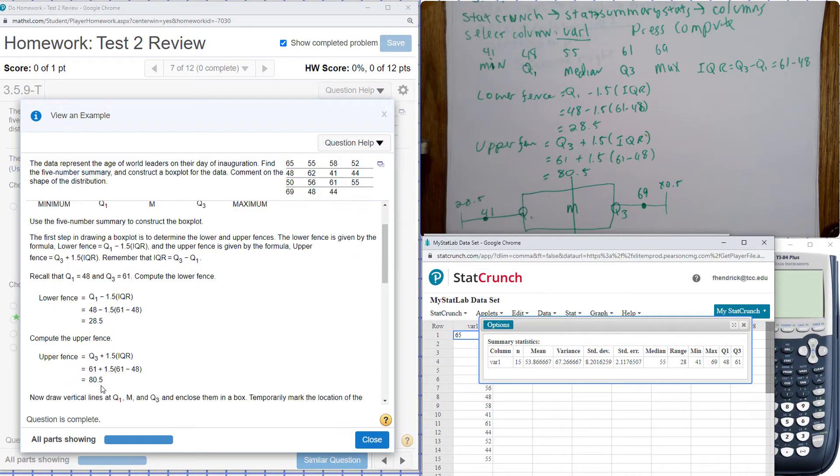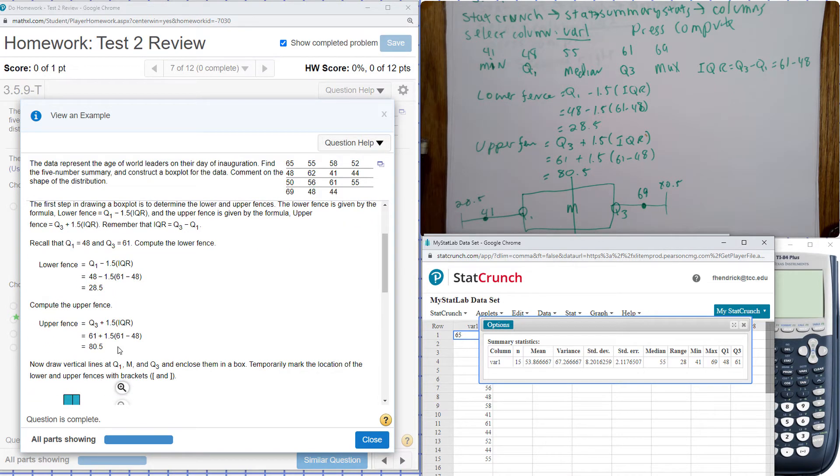And we can do our upper fence: Q3 plus 1.5 times IQR, and it gives us 80 for our upper fence.